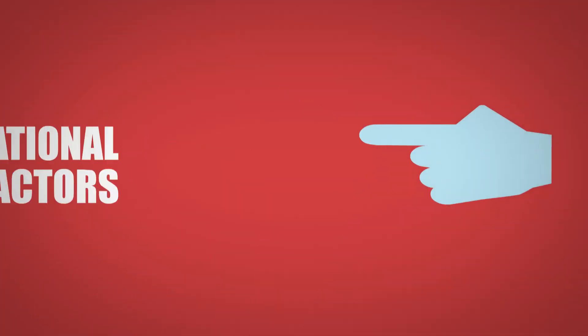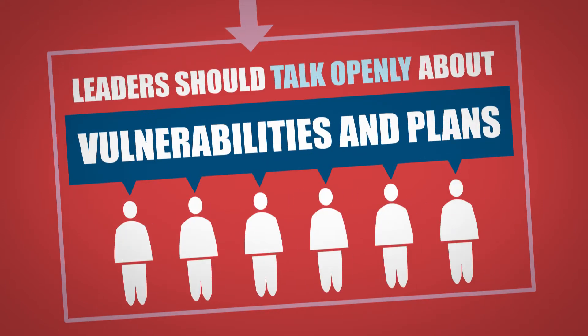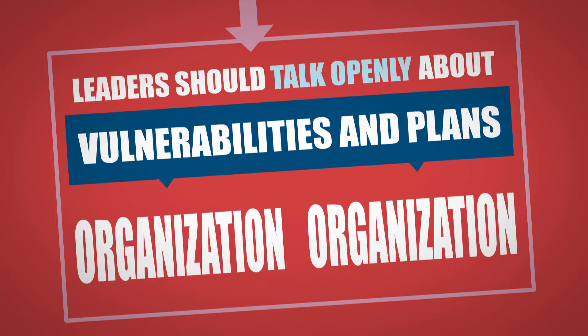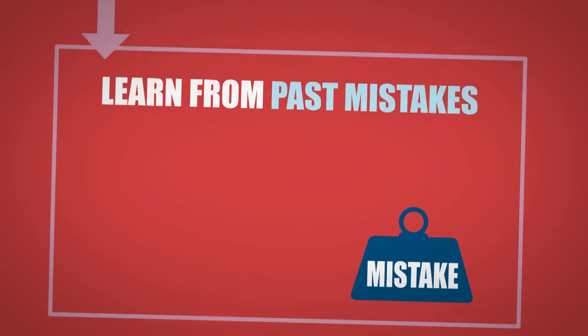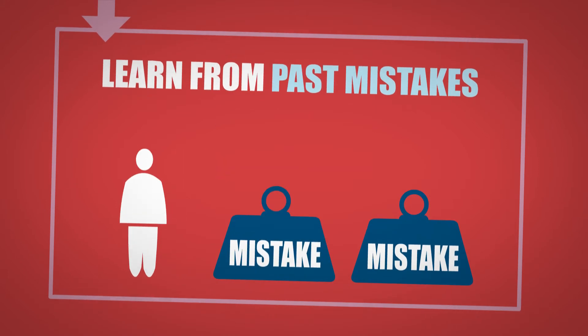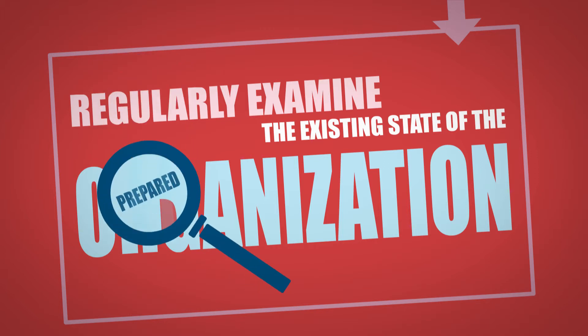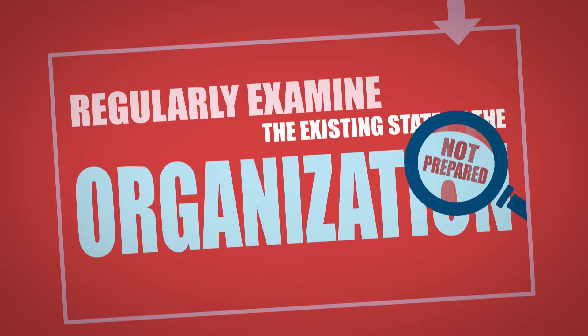To overcome organizational factors, leaders should talk openly about vulnerabilities and plans, both within the organization and with other organizations. They must learn from past mistakes and use what they've learned to make improvements. Decision makers need to regularly examine the existing state of the organization and challenge the present status of preparedness.